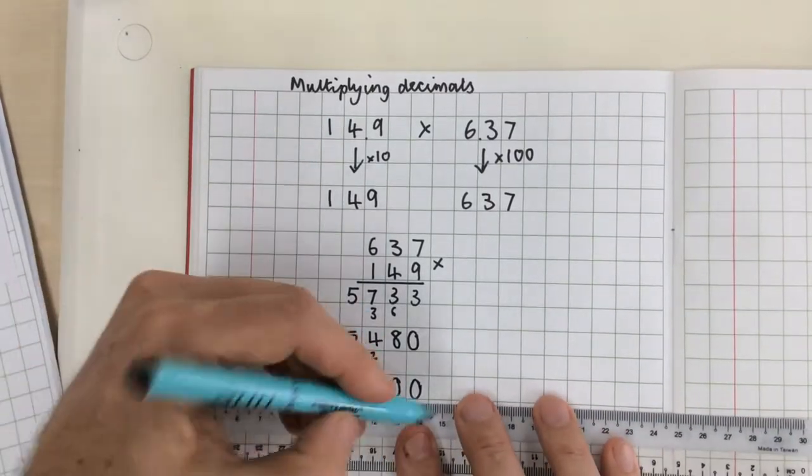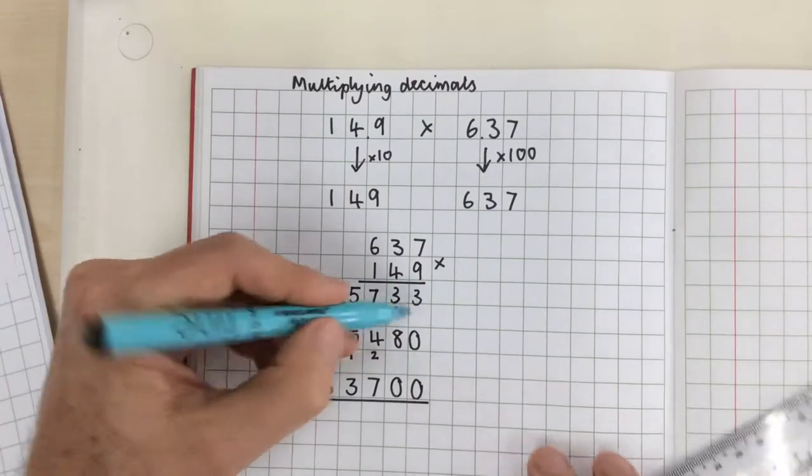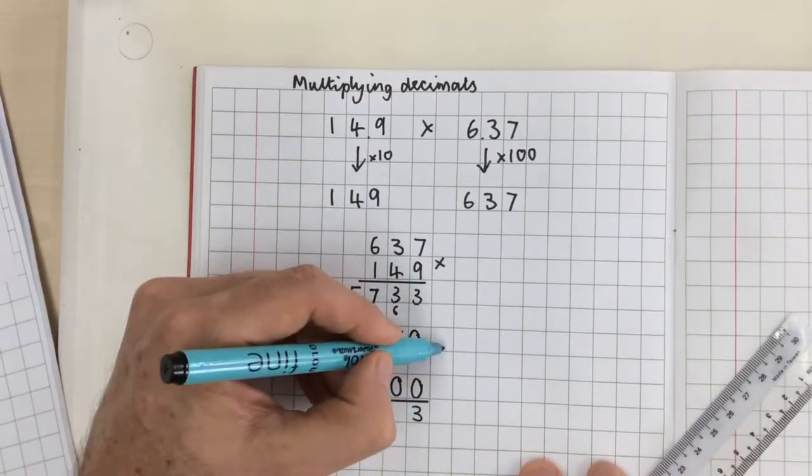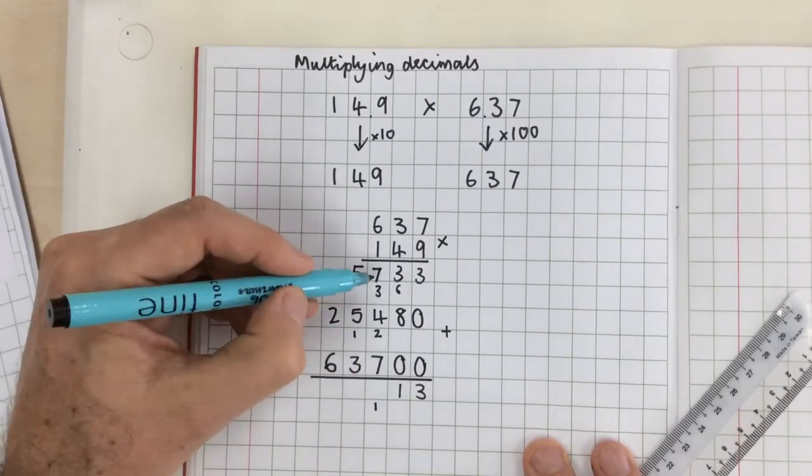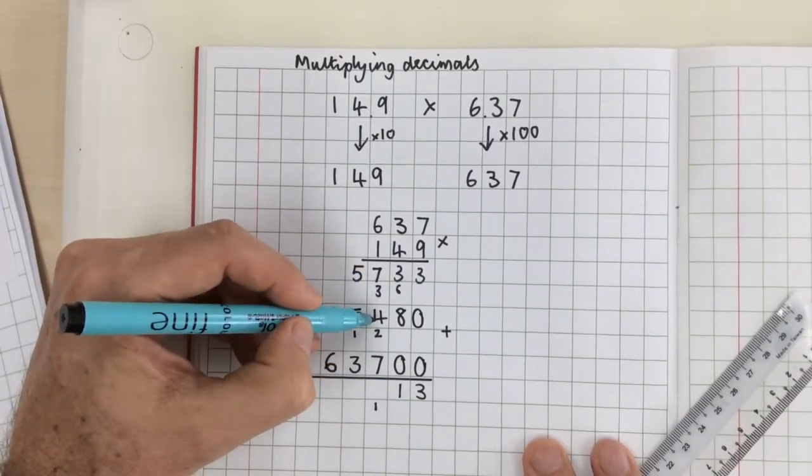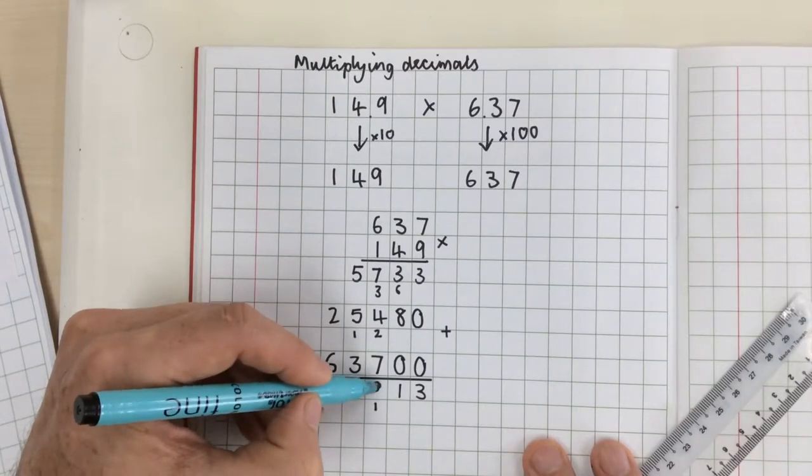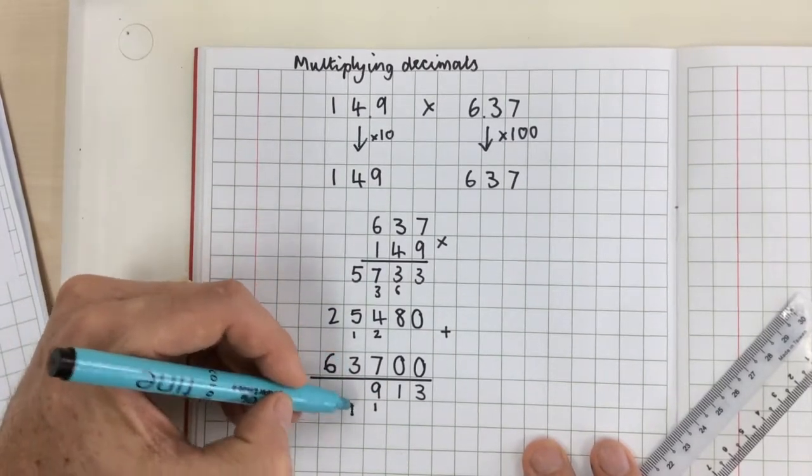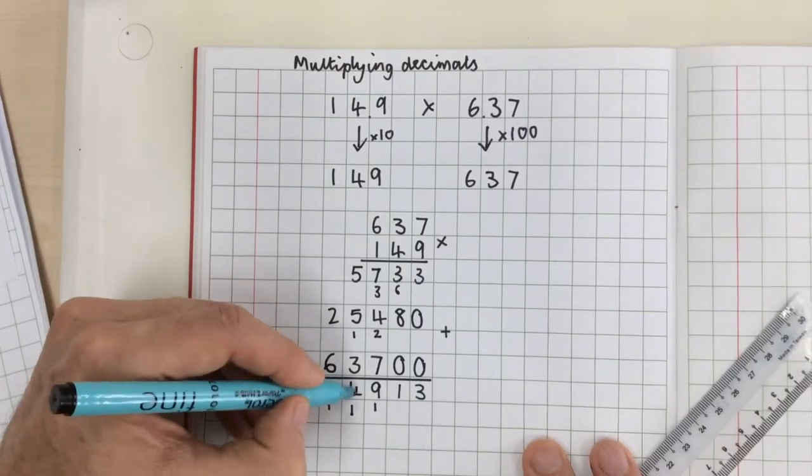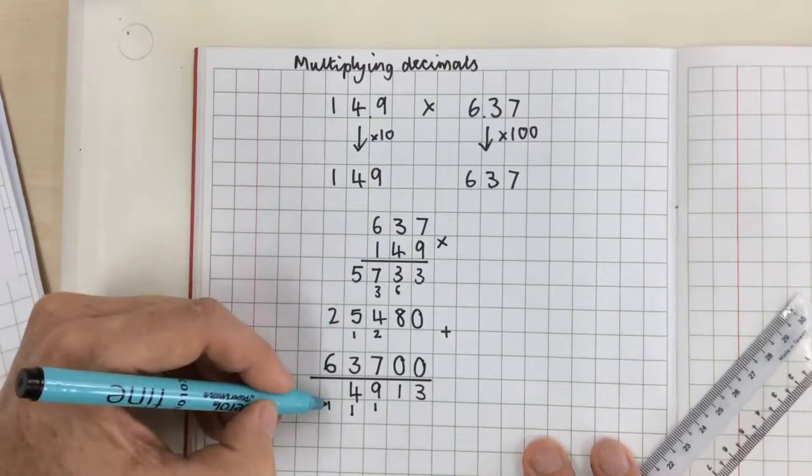Then I'm going to add together these parts. 3. 3 plus 8 is 11. Double 7 is 14, add 4 is 18, add 1 is 19. 5 add 5 is 10, add 3 is 13, add 1 is 14. 6 add 2 is 8, add 1 is 9.